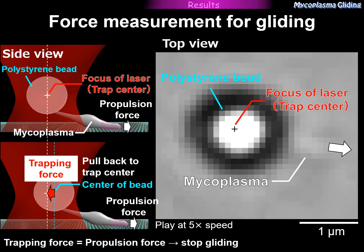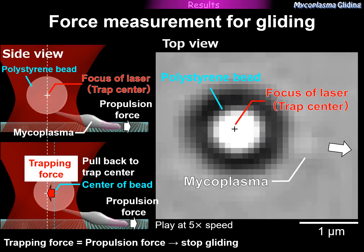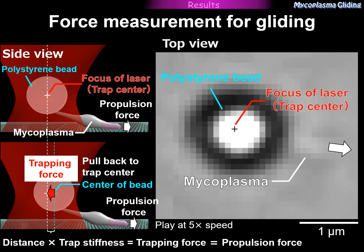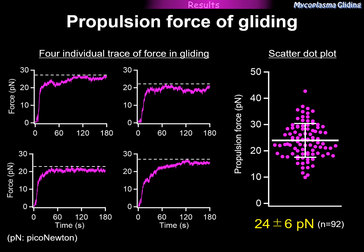This is a movie of the force measurement. The cell pulls the polystyrene bead in the direction of the arrow, and then the movement stops. We can calculate the trapping force from the distance between the focused point of the laser and the center of the bead, and the trapping force equals the propulsion force of gliding. These are typical time courses of force. The broken lines show the maximal propulsion force of gliding. The propulsion force across 92 cells was on average 24 piconewtons.